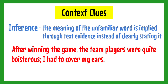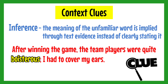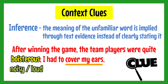For example: After winning the game, the team players were quite boisterous. I had to cover my ears. In this example, you need to figure out the meaning of the word boisterous. You have to look for the clue — what is the context clue that can help us identify its meaning? The clue is 'cover my ears.' In what instance does a person cover his ears? It is when the people around him are noisy or loud. As you can see, the clue does not directly give you the meaning. You need to use your prior knowledge or analyze the clue first. And that is what an inference type of context clue is.